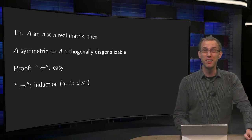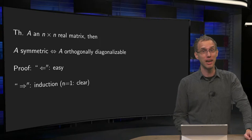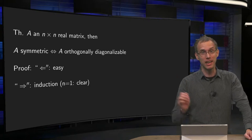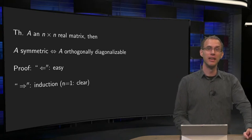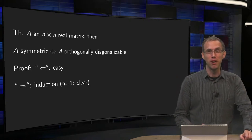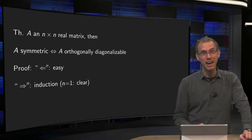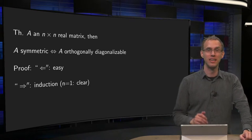If we have enough independent eigenvectors, we automatically have enough eigenvalues and we can diagonalize a matrix. But this is usually the tricky part: finding enough independent eigenvectors.